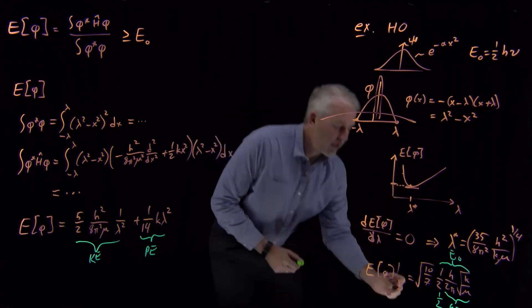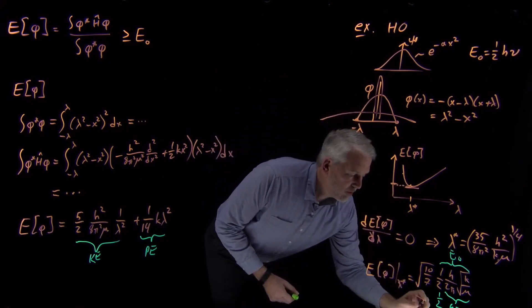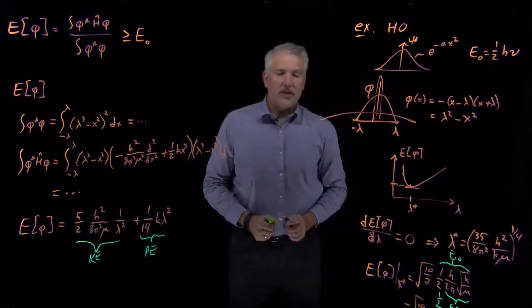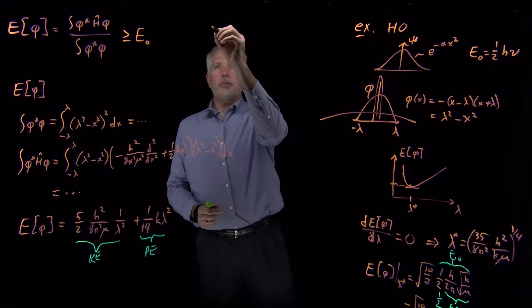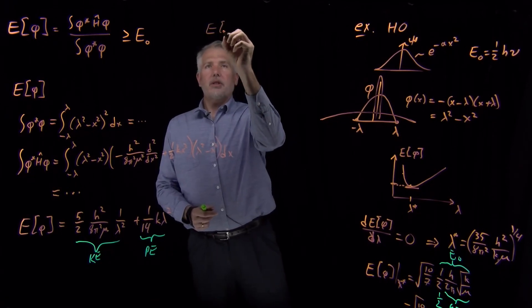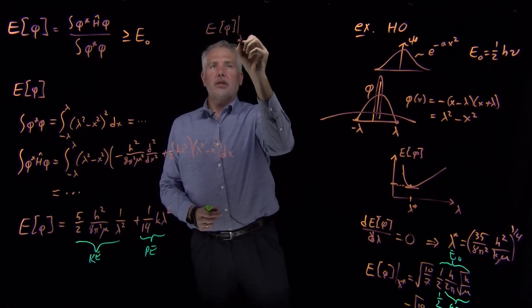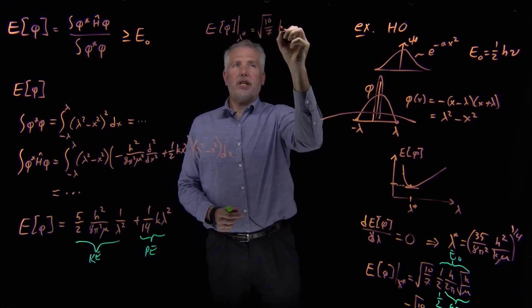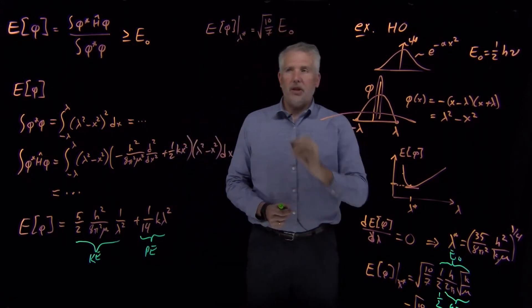The lowest I can get the energy to be is square root of 10 over 7 times the true ground state energy. You can't see that off the bottom of the board. The lowest is square root of 10 over 7 times the ground state energy.